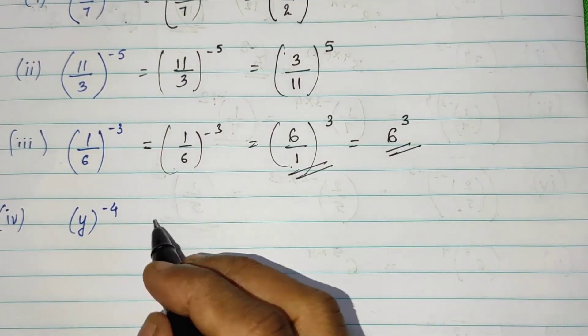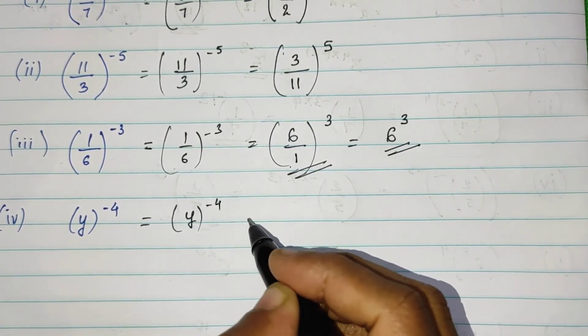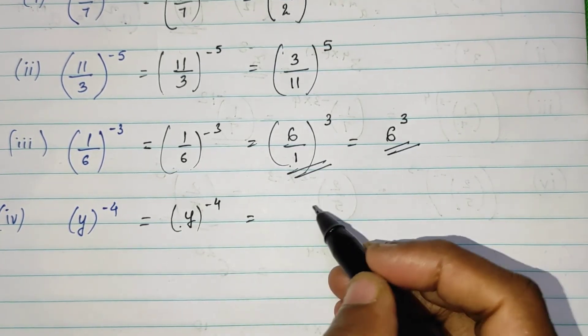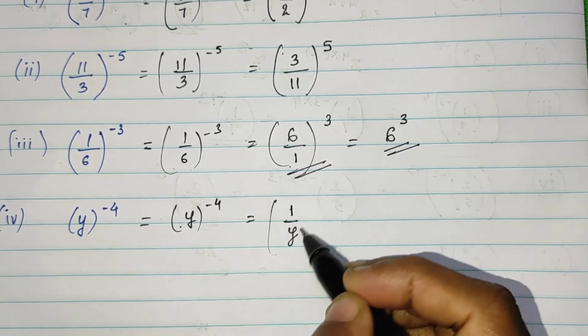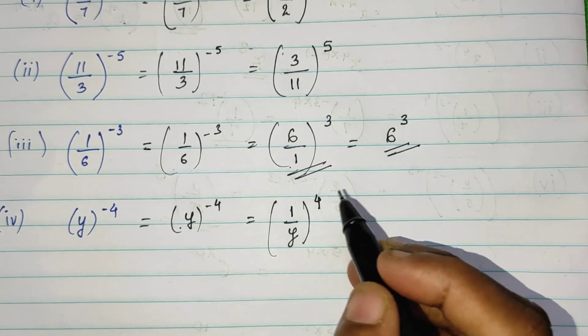And the last one. Y raised to minus 4. So we have to do reciprocal. Every number has 1 in denominator, so 1 upon y raised to 4, minus will become positive 4.